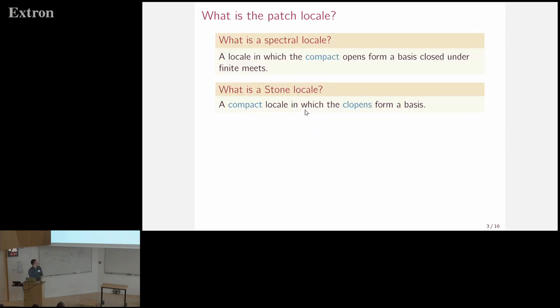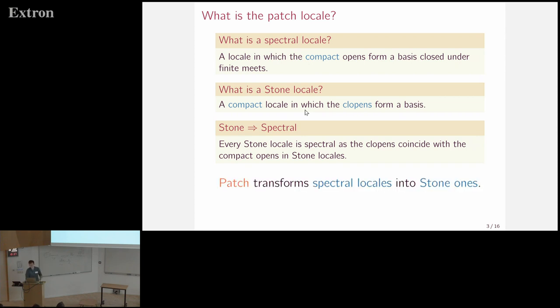And there are two kinds of important locales that we are interested in. The first one is a spectral locale, which is a locale in which the compact opens form a basis closed under finite meets. And the other is a stone locale, which is a compact locale in which the clopens form a basis. And the latter is a special case of the former since every stone locale is spectral. And the idea of the patch construction is that it takes us exactly in the opposite direction. So it takes a spectral locale and transforms it into a stone one. And it is the universal such transformation.